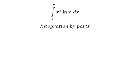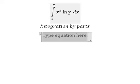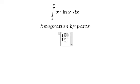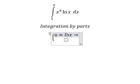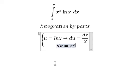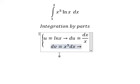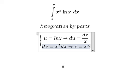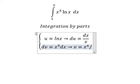So I will put u equals to ln x. So this one we can do first derivative for both sides and we got like this. dv that is x to the power of 5 dx. The integration of this one that is x to the power of 6 over 6.